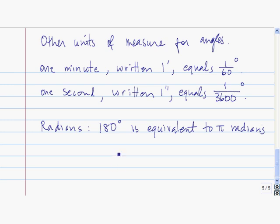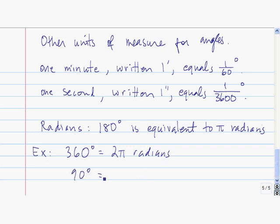Another unit of measure for angles is called a radian. 180 degrees is equivalent to pi radians. So 360 degrees is 2 times 180, which means 360 degrees is 2 times pi radians. Also, 90 degrees is half of 180 degrees, so that means it's half of pi radians, or pi over 2 radians.